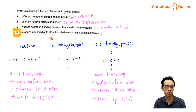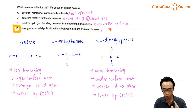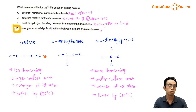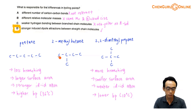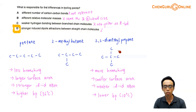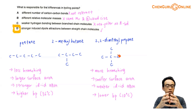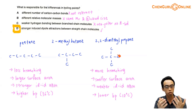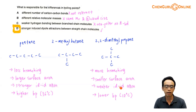Finally, option D: stronger induced dipole attractions between straight chain molecules. This is the best answer. Pentane is straight chain, so the extent of branching is less and it has a bigger surface area for molecular interaction, making the ID-ID stronger and explaining the higher boiling point. Conversely, 2,2-dimethylpropane is highly branched, so it is more spherical, has a smaller surface area, and the ID-ID will be weaker, causing the boiling point to be lower.